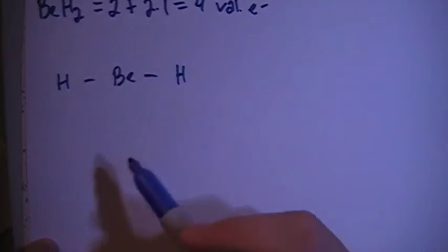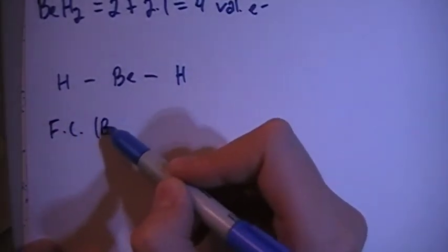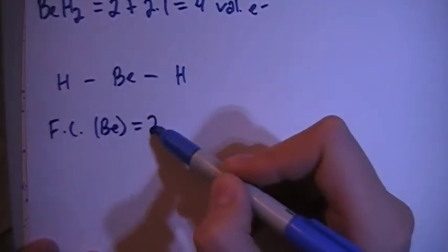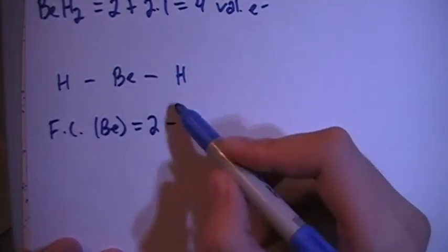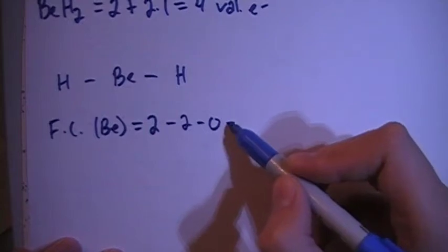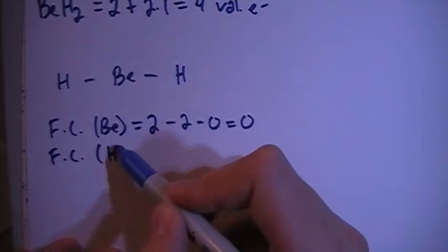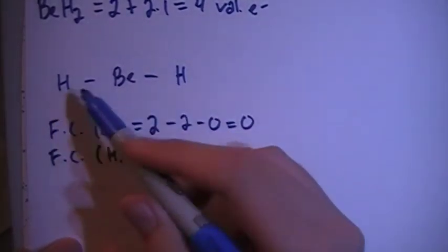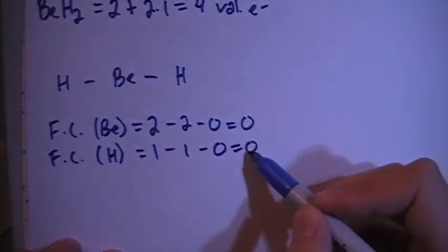Let's go ahead and verify by checking the formal charges. The formal charge on beryllium is going to be the two valence brought in minus the one, two bonds minus zero non-bonding electrons for a formal charge of zero. And now the formal charge on each hydrogen is one electron brought in minus one bond for each hydrogen minus zero non-bonding electrons for a formal charge of zero.